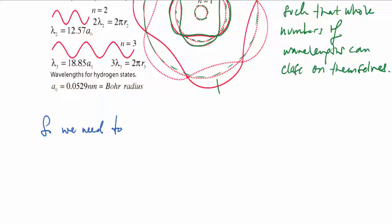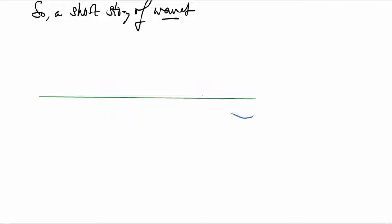If we want to understand anything about the wave behavior of electrons, we need to look at waves. Let's do a short study of waves. Here's a wave with wavelength lambda, given in meters, moving forward with velocity.